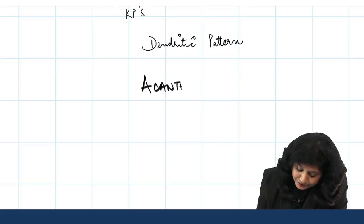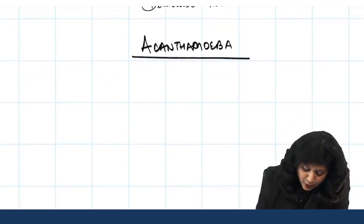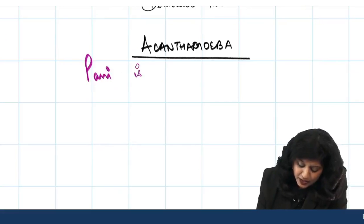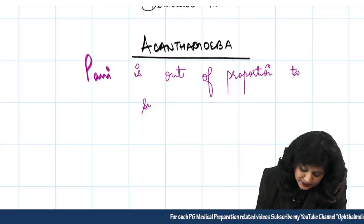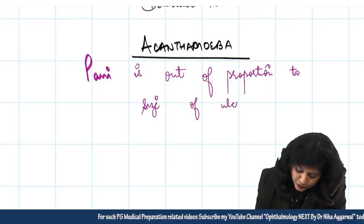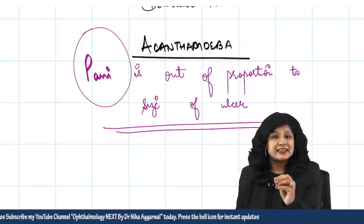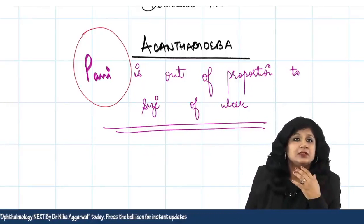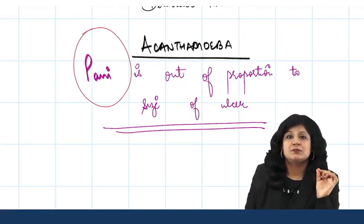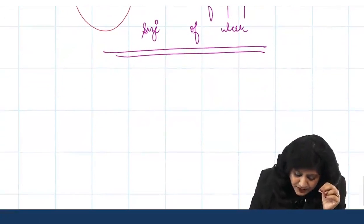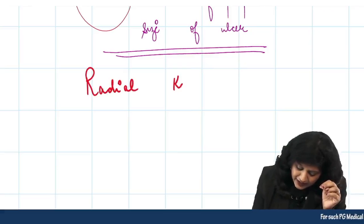Finally, in Acanthamoeba keratitis, the most important feature is pain out of proportion to the size of the ulcer. Pain is a very important feature you cannot neglect. When you examine the patient, you will not see a large ulcer, yet the pain is much greater than expected — especially in the context of contact lens use.